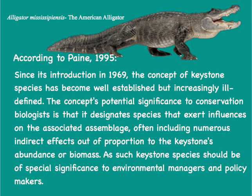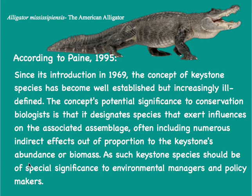According to Payne 1995, since its introduction in 1969, the concept of keystone species has become well-established but increasingly ill-defined. The concept's potential significance to conservation biologists is that it designates species that exert influences on the associated assemblage, often including numerous indirect effects, out of proportion to the keystone's abundance or biomass. As such, keystone species should be of special significance to environmental managers and policy makers.